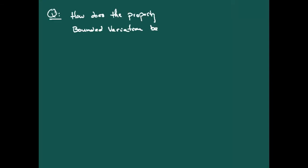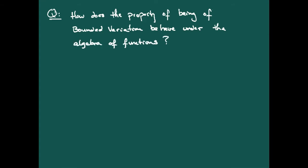This leads us to a clearer idea of what a function of bounded variation is: variation is measuring how much ground a function covers over a particular interval — how wiggly it is. We might wonder how this property behaves under the algebra of functions: addition, subtraction, multiplication, and division. Quite naturally, addition, subtraction, and multiplication behave very well, and that is the context of Theorem 6.9.